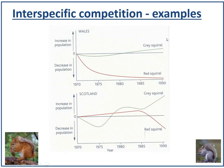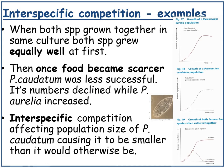You can see that as grey squirrel numbers increased, red squirrel numbers declined. Another example is Paramecium: when two species were grown together in the same culture, both initially grew well, but once food became scarce, P. chordatum was less successful and its numbers declined, while P. auralia increased. This is interspecific competition affecting the population size of P. chordatum, causing it to be smaller than it would otherwise have been.